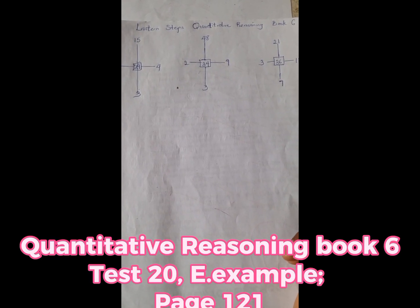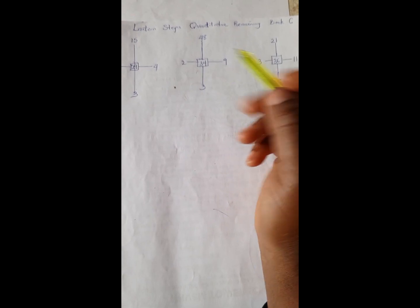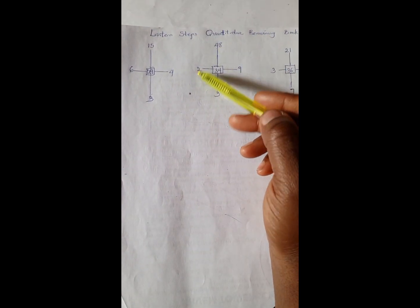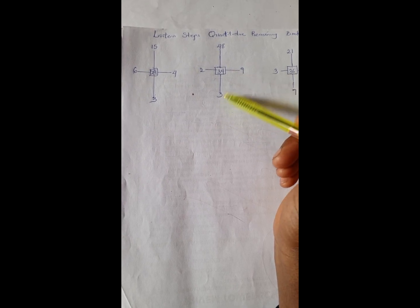Welcome to Quantitative Solution Class. Okay, so this is a problem before us. We have 15, 6, 4, 3, and 29. And here we have 48, 2, 34, 9, and 3. And here we have 21, 36, 11, 7, and 3.